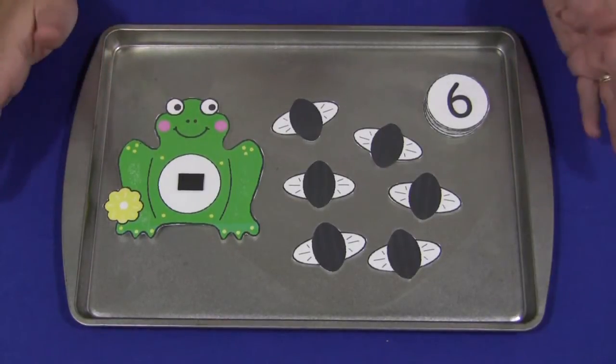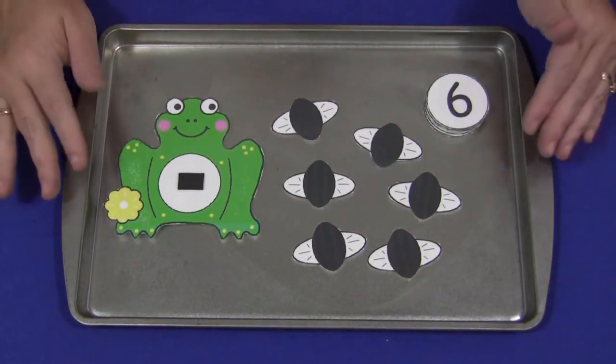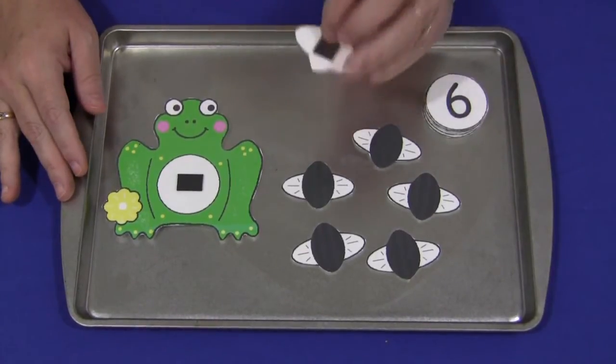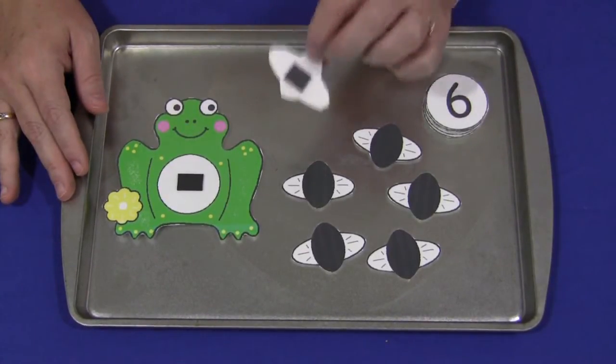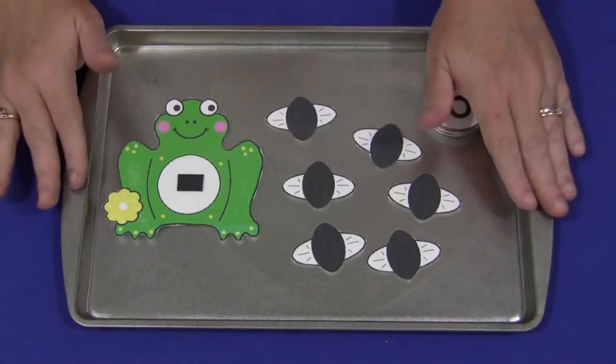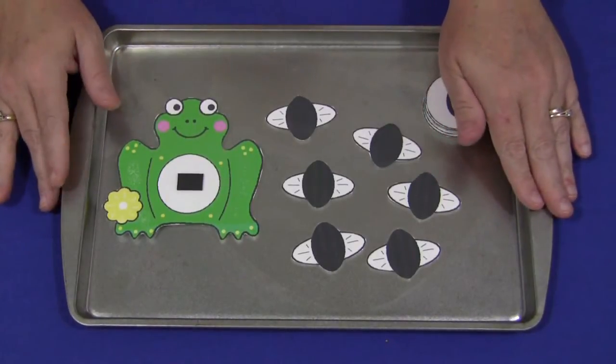You can set this up any way that you want. I print them on cardstock, laminate them, and on the back of each piece I have a self-adhesive magnet because I like to use it on a metal cookie sheet, but you don't have to. You can set it up any way you wish.